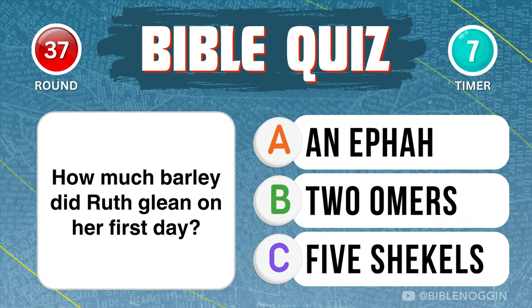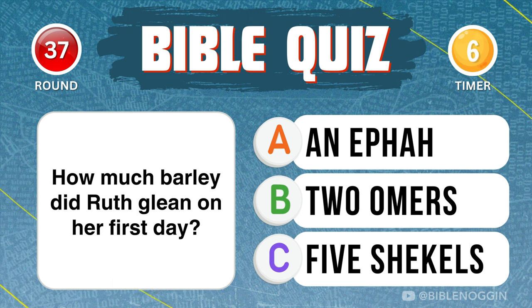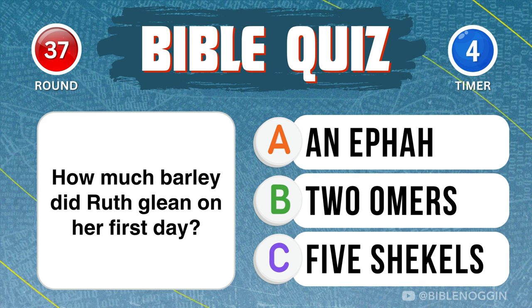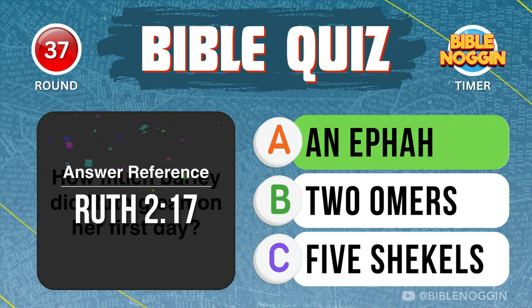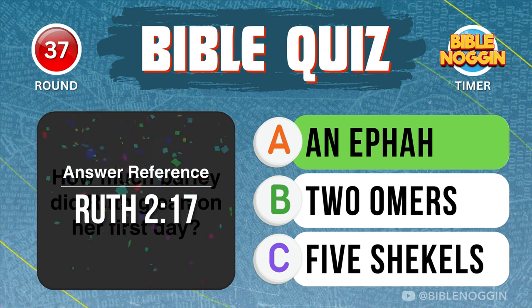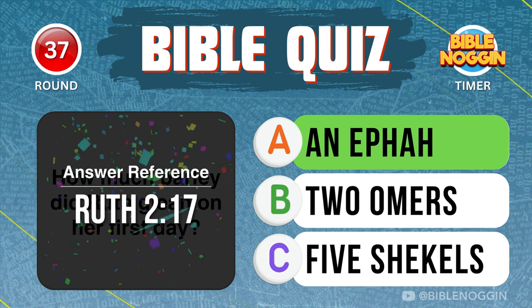Question 37: How much barley did Ruth glean on her first day? An ephah — found in Ruth chapter 2, verse 17.